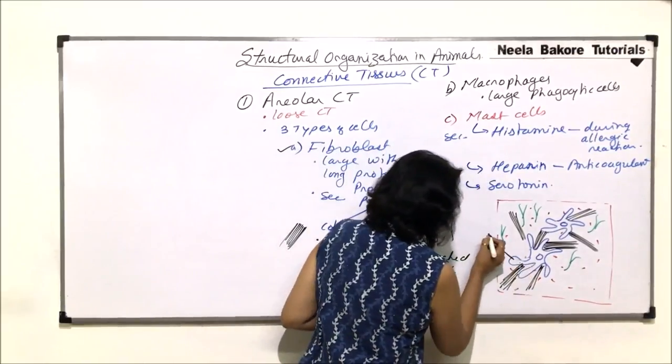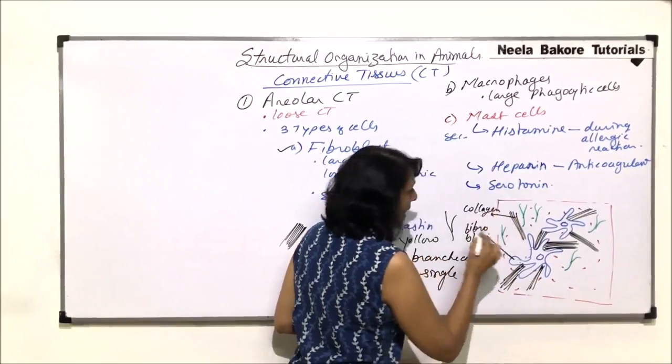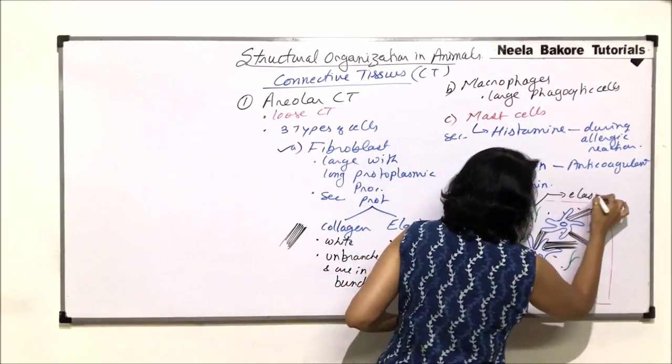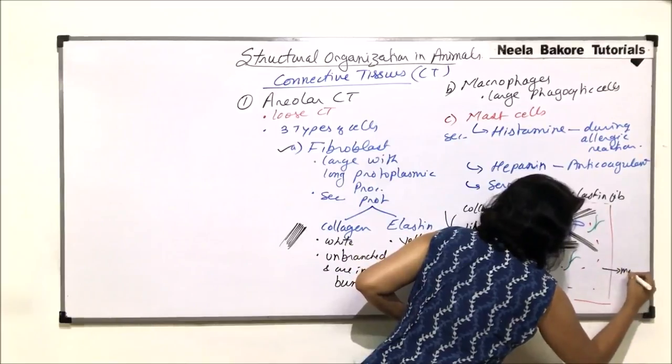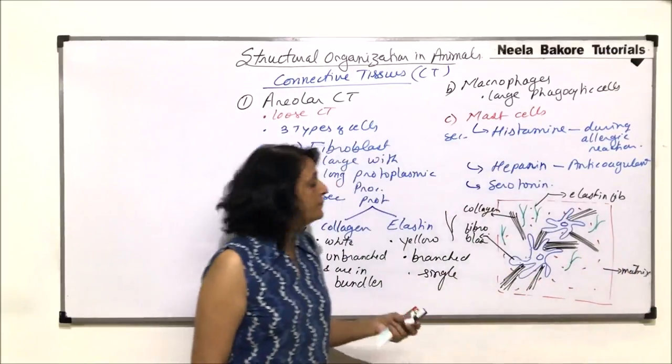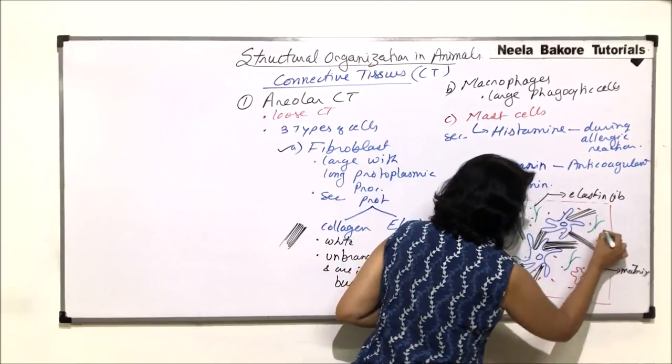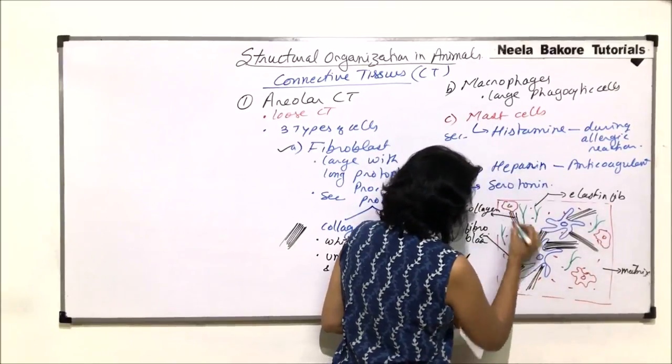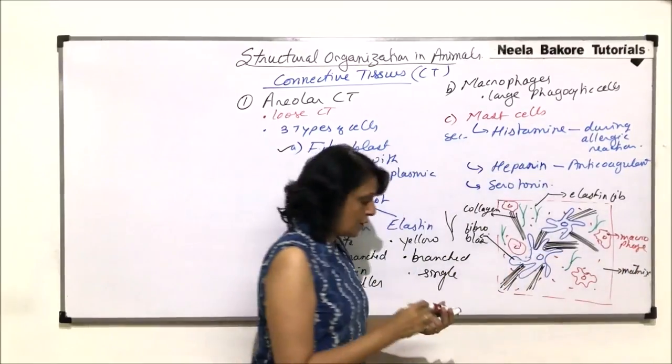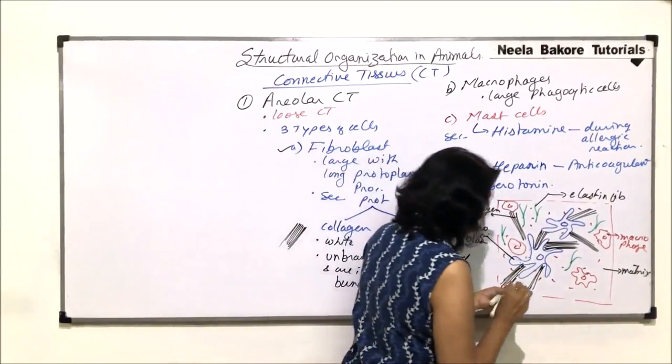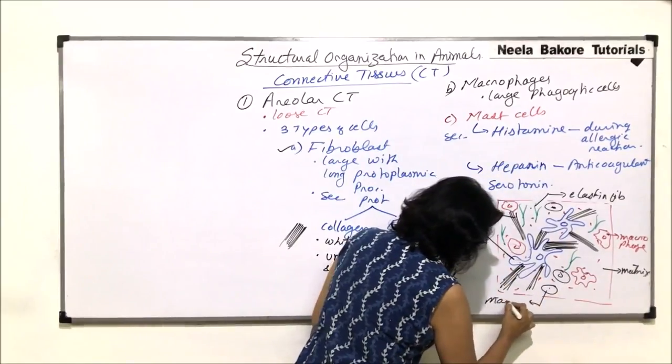Let us label this. This is fibroblasts, this is collagen and these are elastin fibers. And this material which we have filled here is the matrix. That is the ground tissue. Two more cells are to be drawn. That is macrophages. Macrophages are large irregular cells. And let us label this as macrophage. And the third one are the mast cells. So let us draw these mast cells which are little oval. This is the mast cell.